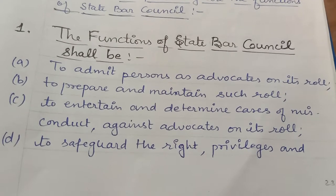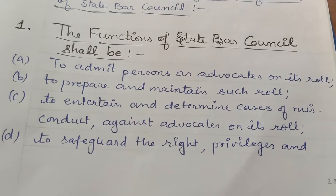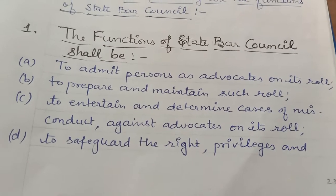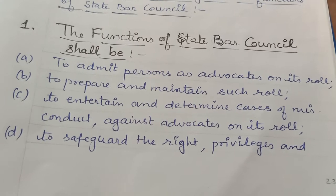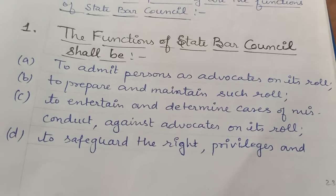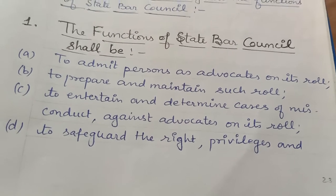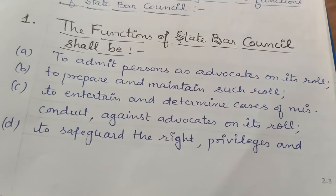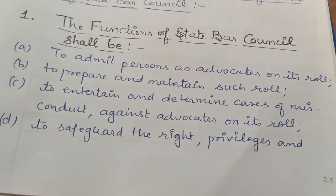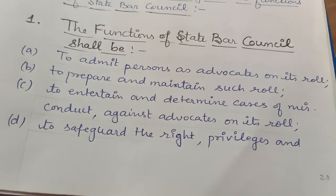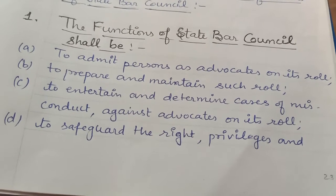Advocates ko admit karte hain — jo log law ki degree le lete hain, jo lawyer ban jate hain, means unhe advocate ki Bar Council ke andar roll mein apna name nominate karwana padta hai, admit karwana padta hai. Toh yeh kaam State Bar Council ka hota hai. Aap jis state mein karwana chahte hain — jaise agar aap UP ke hain toh UP se, Delhi ke hain toh Delhi se — aap apne State Bar Council ke andar hi jake apna naam admit karwa sakte hain. Woh State Bar Council aapka naam khud kar leta hai jab aapke paas professional degree hoti hai.